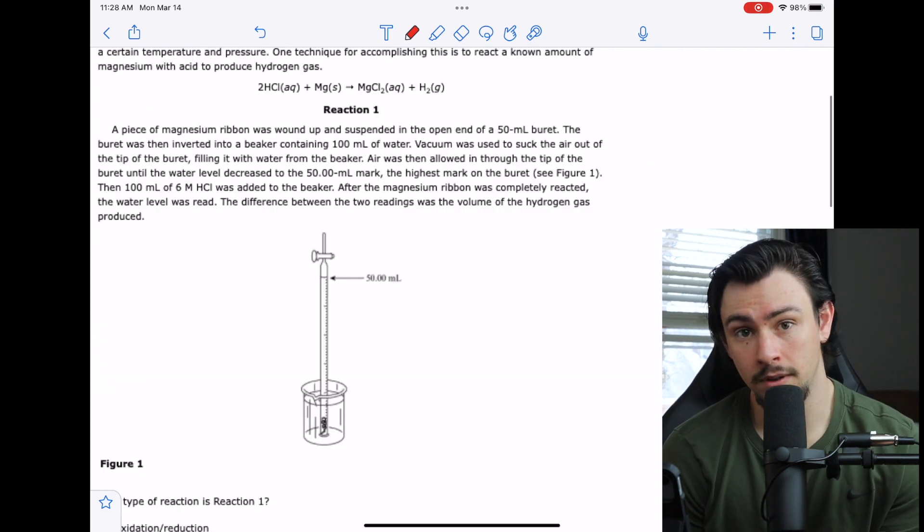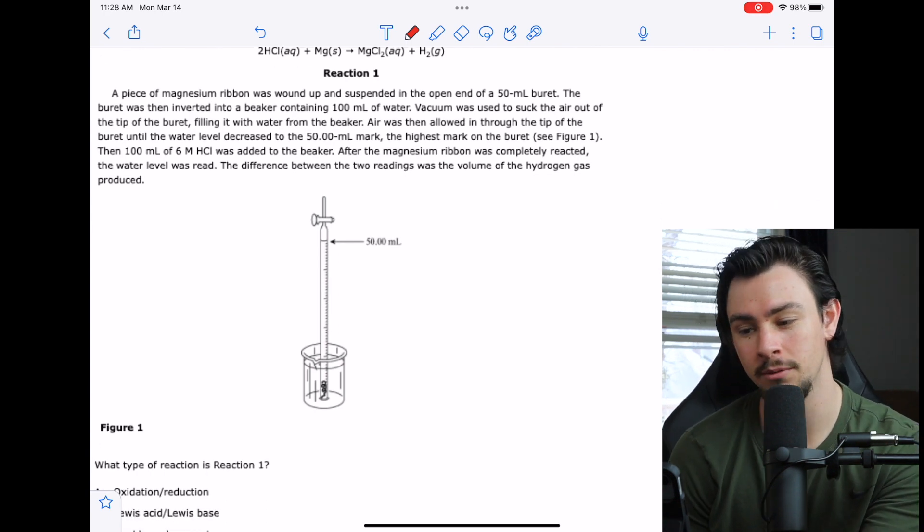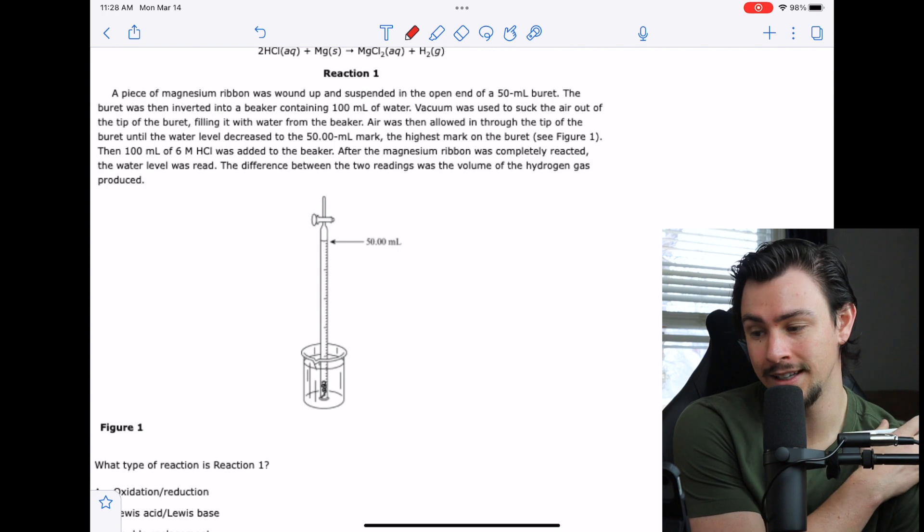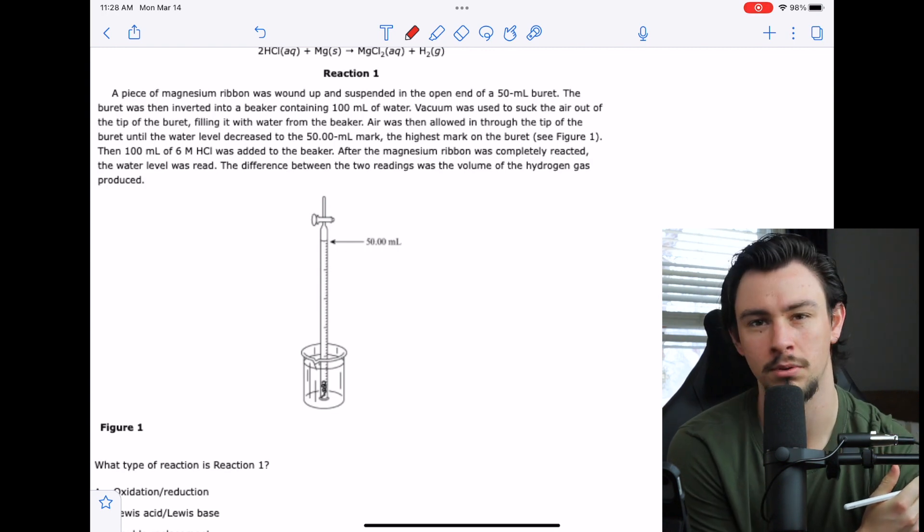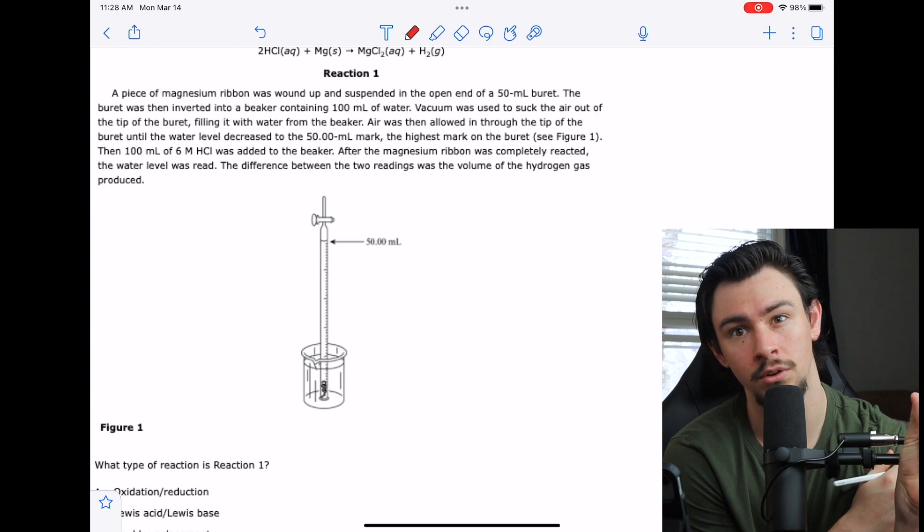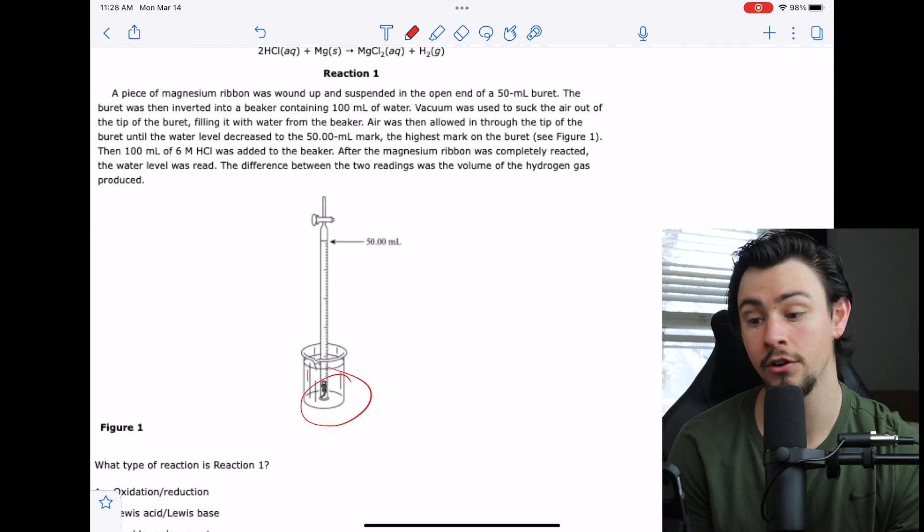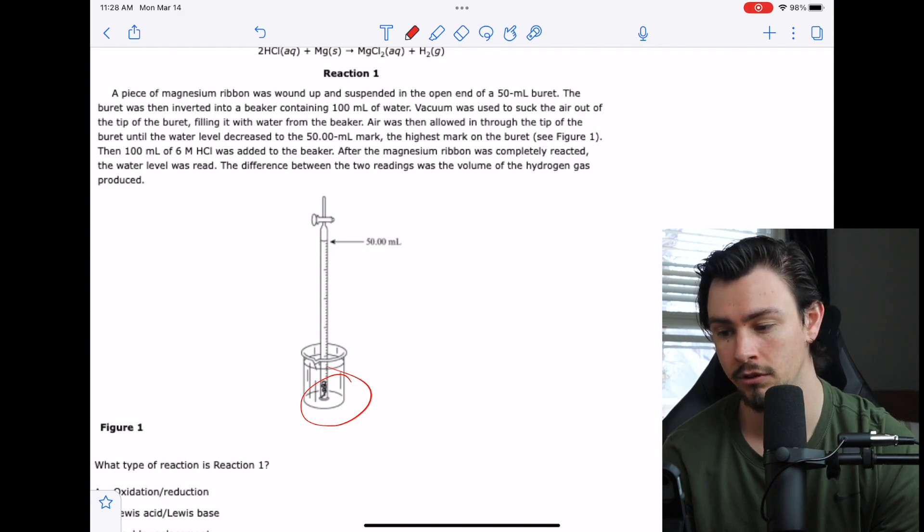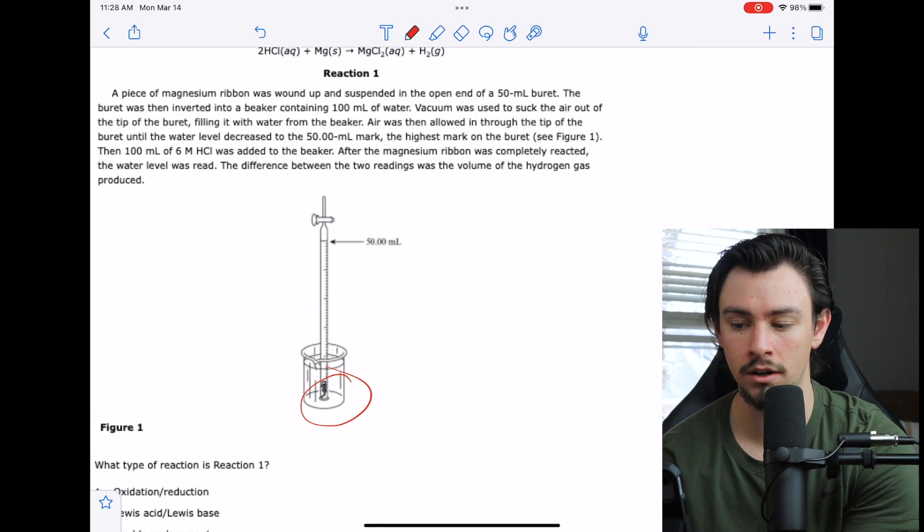And now it looks like they're going to explain how to do this reaction, something we were all curious about. A piece of magnesium ribbon was wound up and suspended in the opened end of a 50 milliliter burette, which would probably be like the top if you're holding a burette. The burette was then inverted into a beaker containing 100 mils of water. Vacuum was used to suck the air out of the tip of the burette, filling it with water from the beaker.